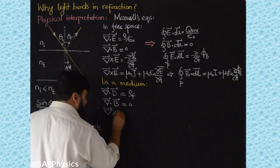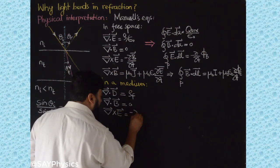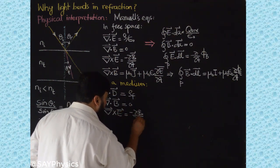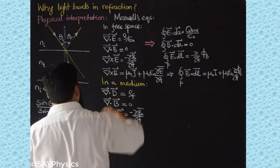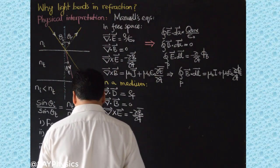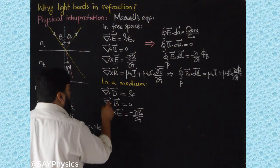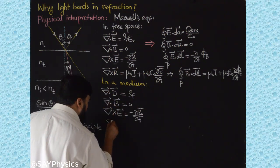It will be del cross E = -∂B/∂t because the electric field will generate a magnetic field, and the fourth equation will change.